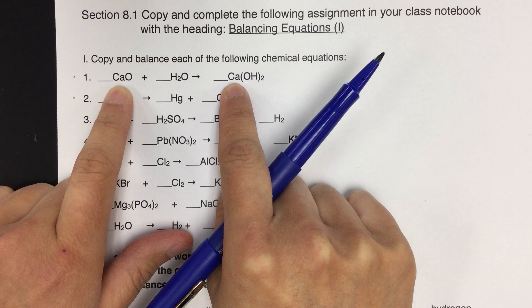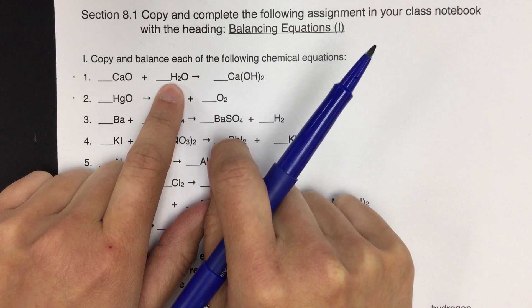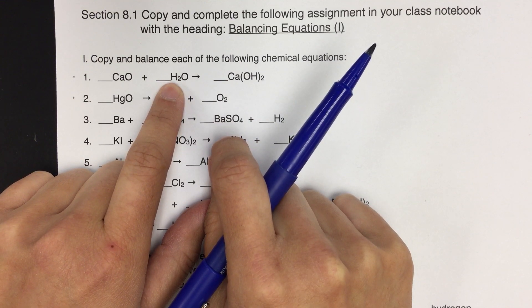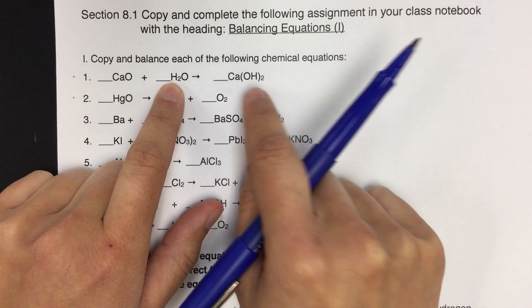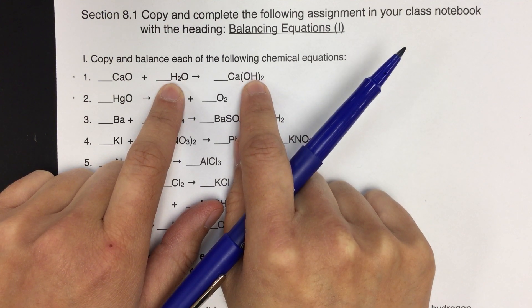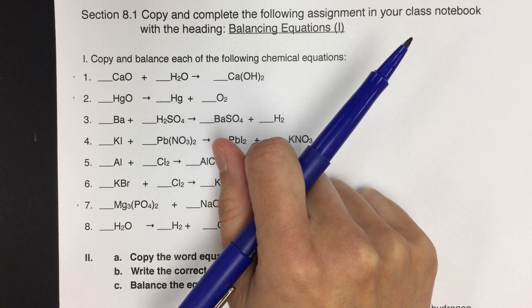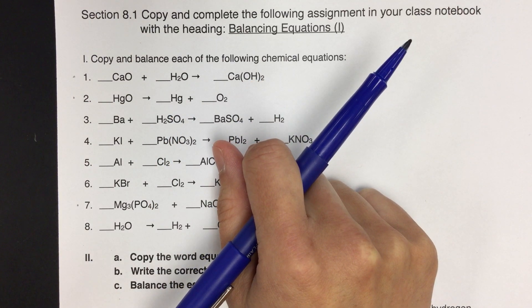All right, so then I'm going to switch to hydrogen because, again, we don't want to do oxygen yet. So hydrogen, there's two on this side of the reaction. On the other side of the reaction, because it's inside the parentheses, there are also two. So again, hydrogen is also already balanced, so we don't have to do anything there.